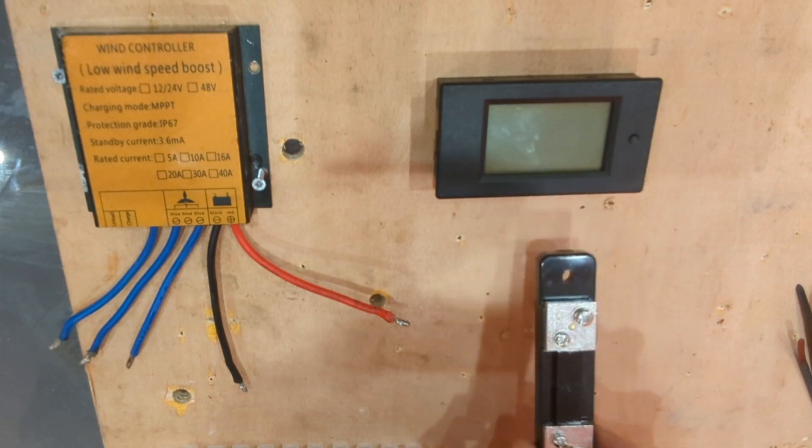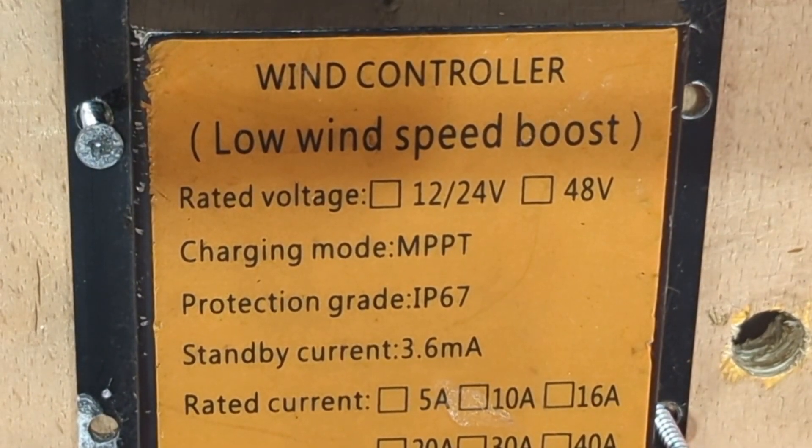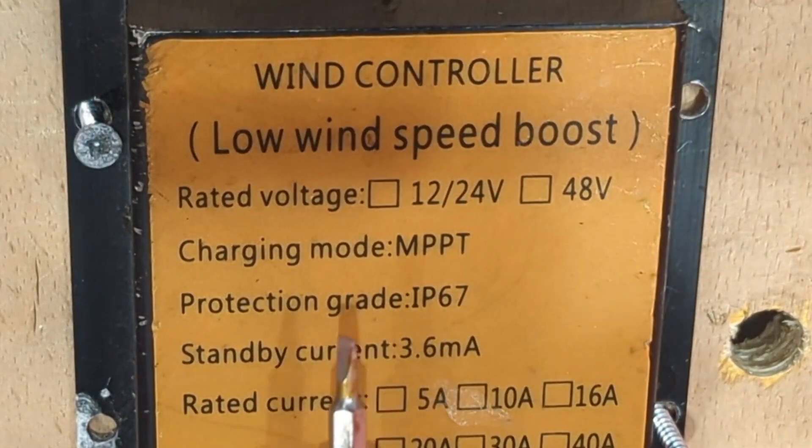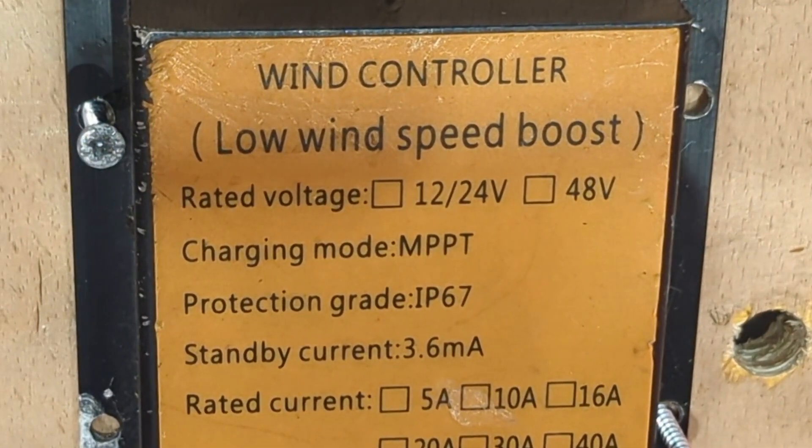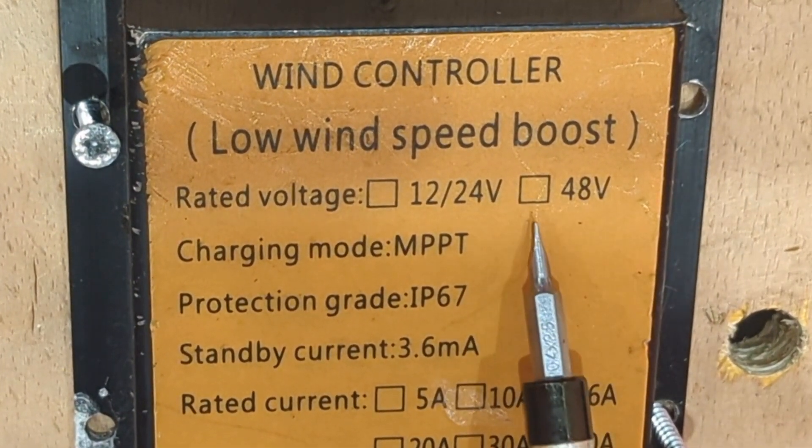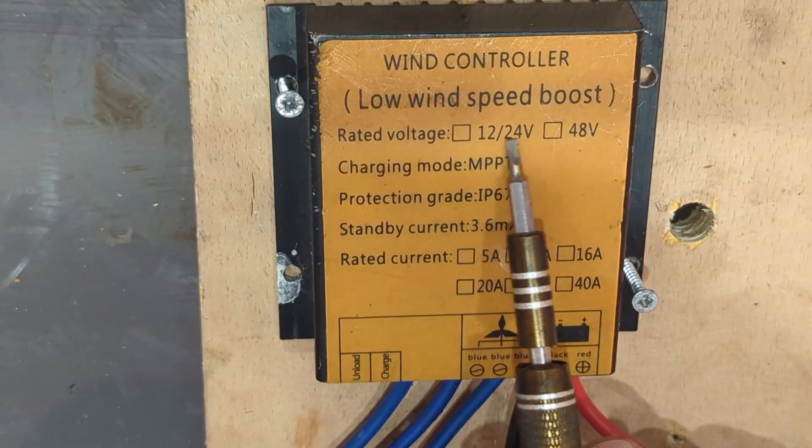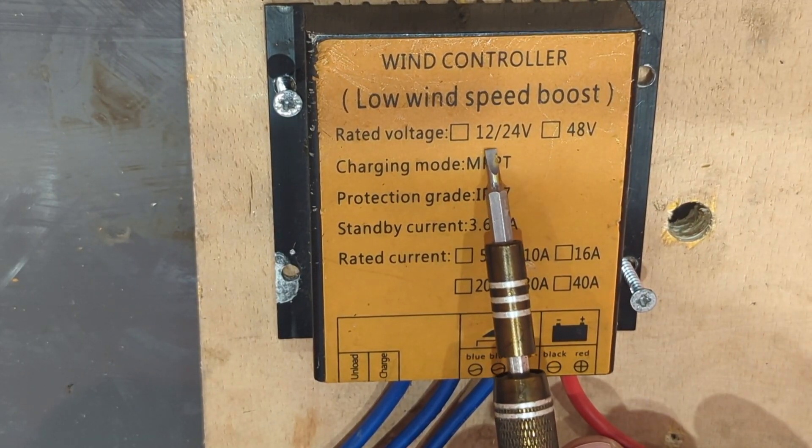And then we've got the shunt regulator. These three things. Firstly, with regards to the controller, it's a very simple, like I say, it's a budget unit not recommended for high-power wind turbines. Even though it says 48 volt on there, I haven't tried it at 48 volts, but I know it works well with 12 and 24 volts.